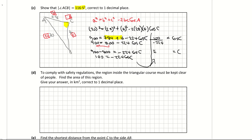Taking the inverse cosine of 100/(−224) gives angle C = 116.51 degrees. The question wants it to one decimal place, so the answer is 116.5 degrees.